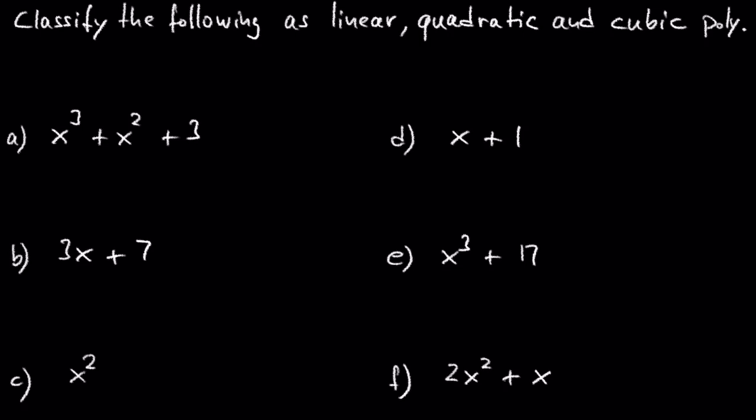Let's classify the following as linear, quadratic, and cubic polynomials. In A we have x cubed plus x squared plus 3. This is a cubic polynomial because the leading term has the exponent 3. In B we have 3x plus 7, where the exponent of x is 1. So this is a linear polynomial.